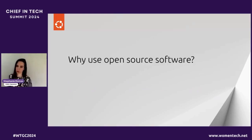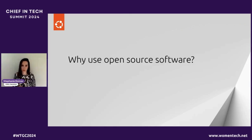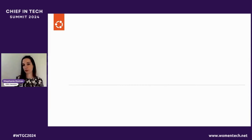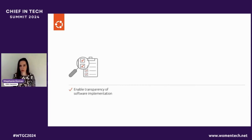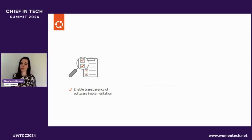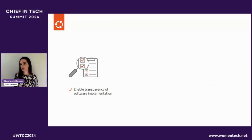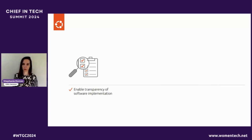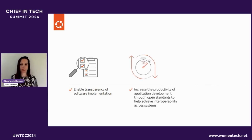So why use open source? This collective innovation is free to use, wonderful, and prevalent. One of the tenets of open source is transparency of implementation — I'm a big believer that trust comes from truth, and that truth is my ability to introspect on the code running on my system. Because open source is freely available and open, you have the ability to look at it and make a decision on whether or not you choose to trust that code. It also increases the productivity of application development through open standards and interoperability.